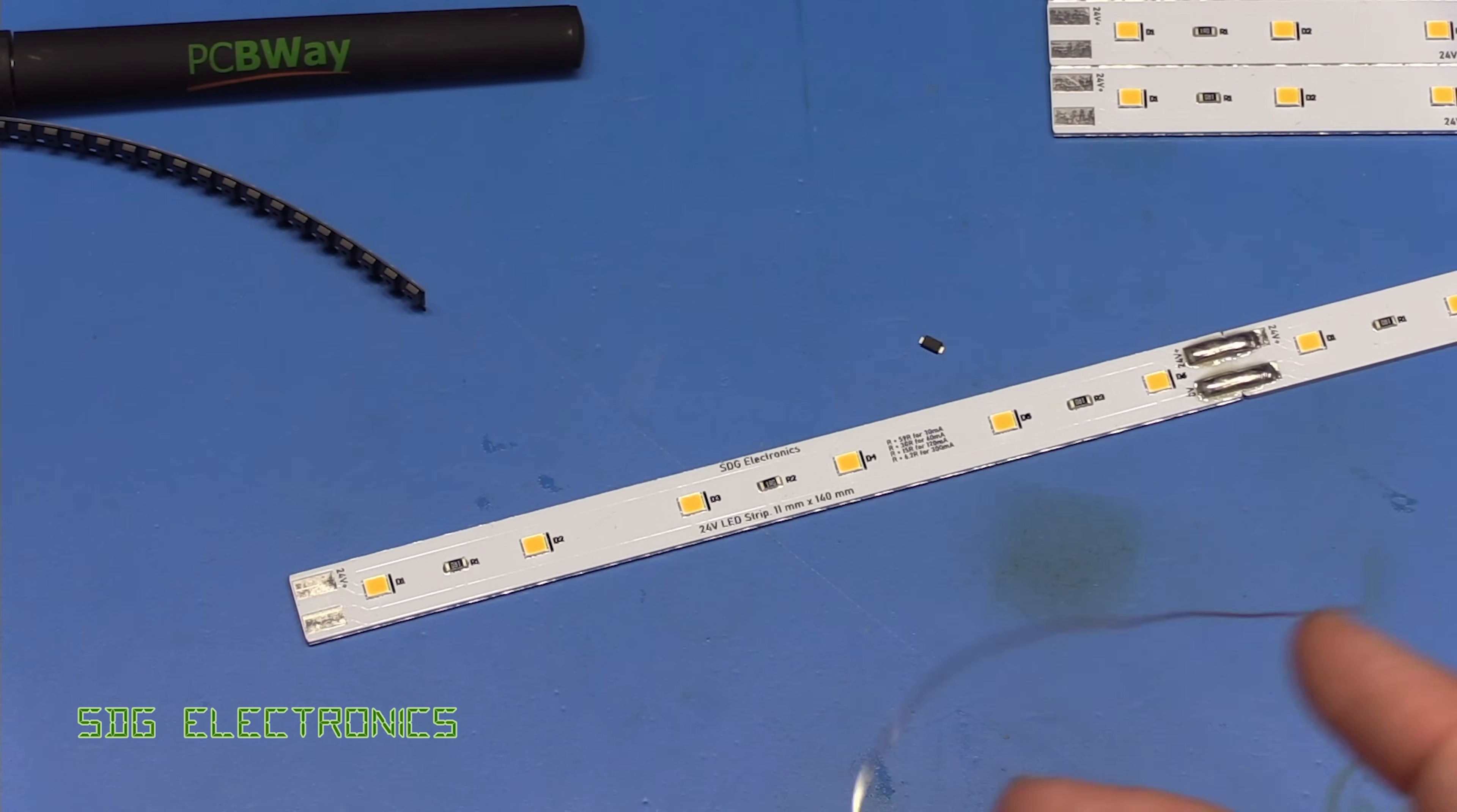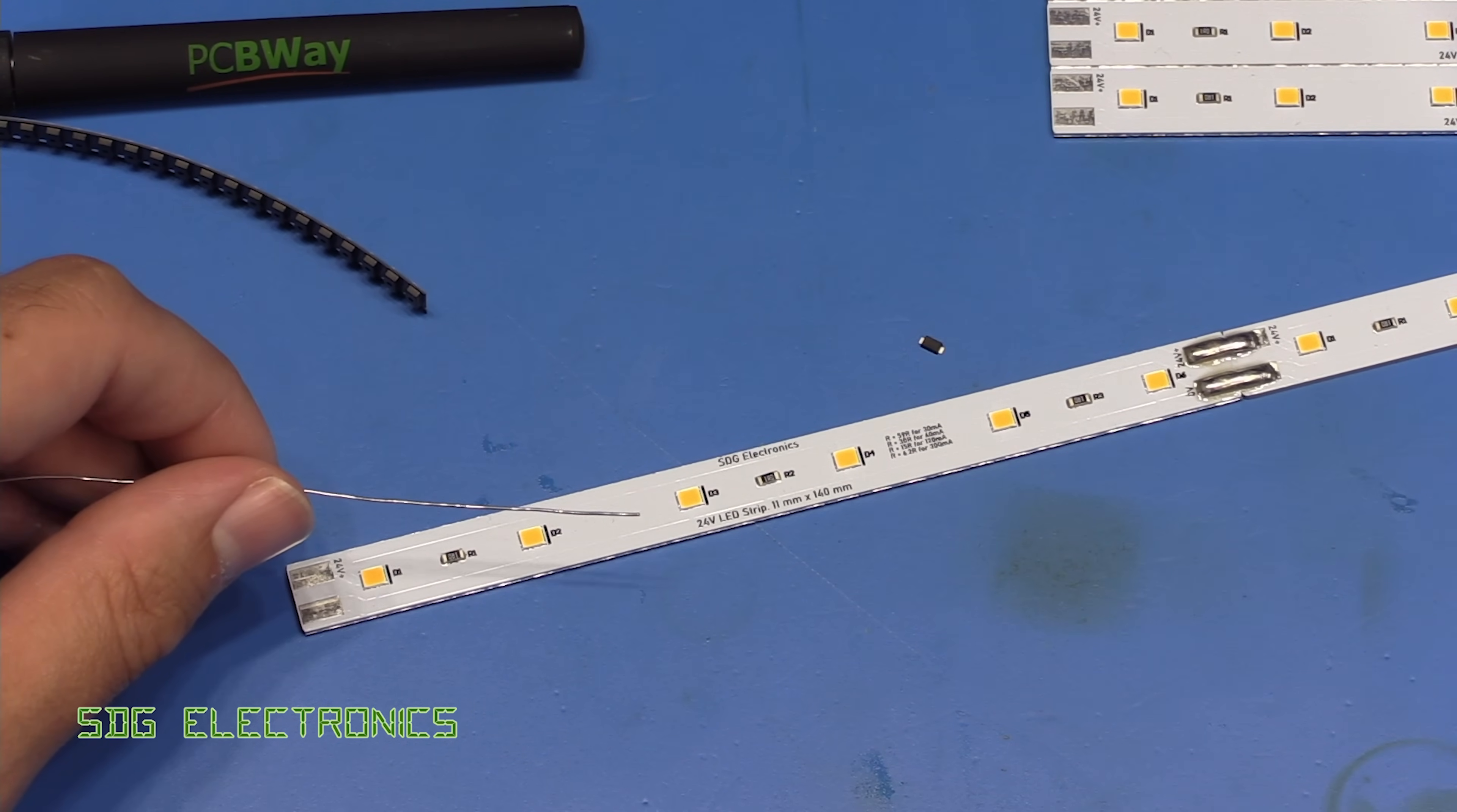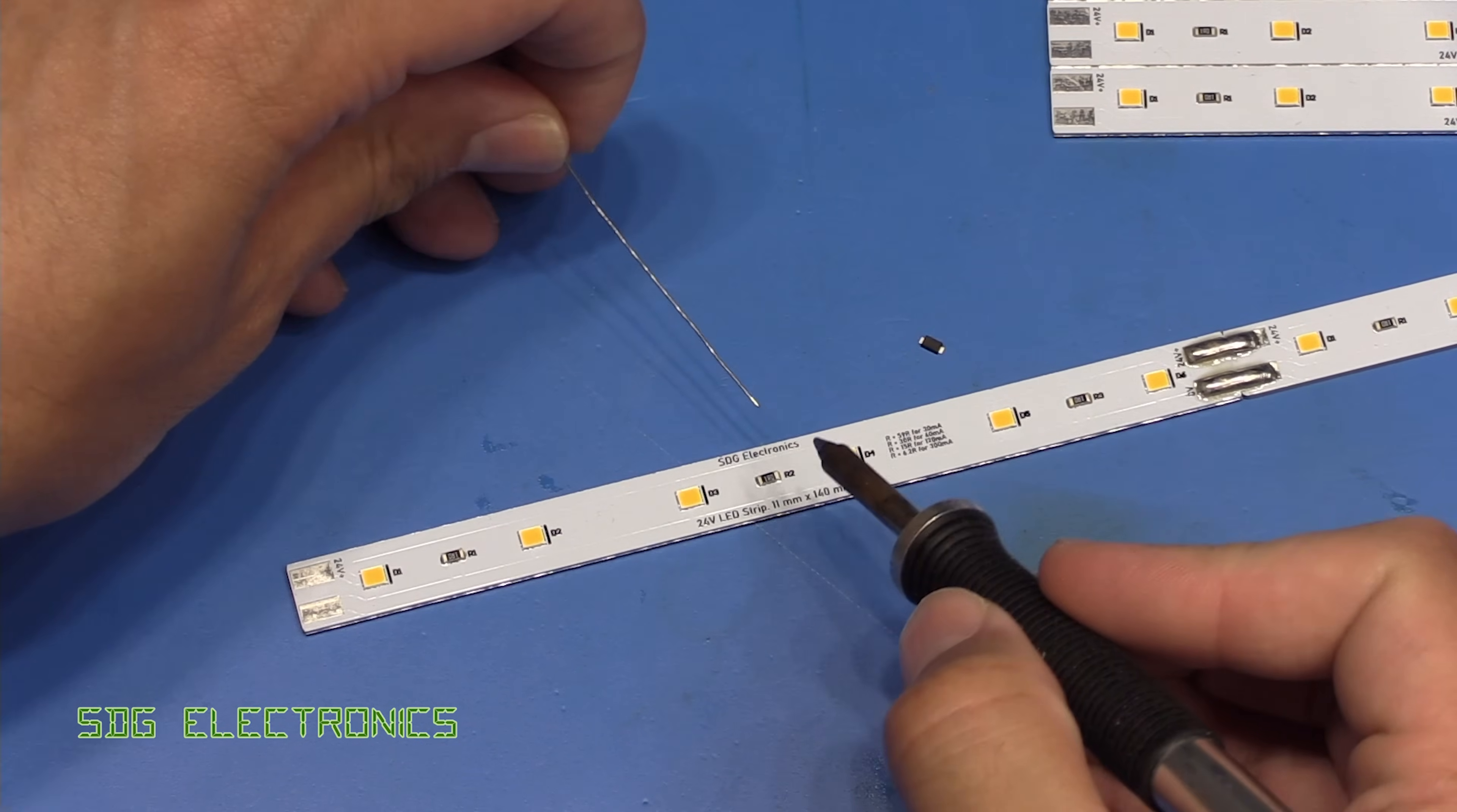So I think the first thing we need to do is add a bit of solder to the resistor so that when we put the tweezers on there we can get some thermal contact to that resistor.